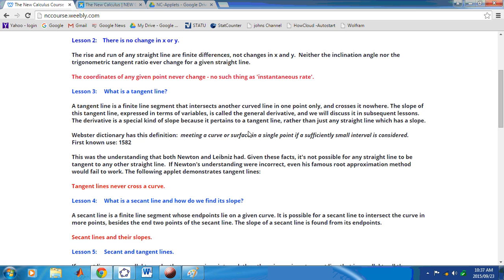So it's imperative to have a clear understanding of what is a tangent line. Let's recap on that. It meets a curve or a surface in a single point if a sufficiently small interval is considered. In other words it can only intersect in one point, extend to both sides of that point, in other words a finite line segment, and crosses the curve nowhere. That is what is a tangent line.